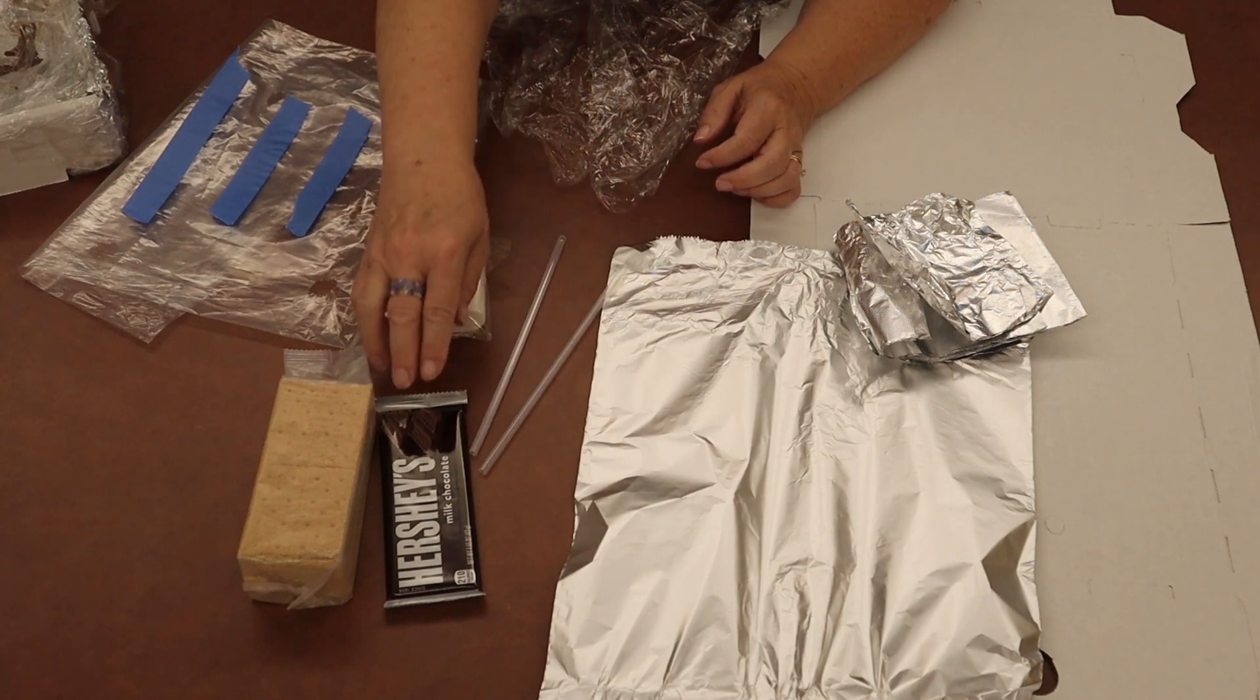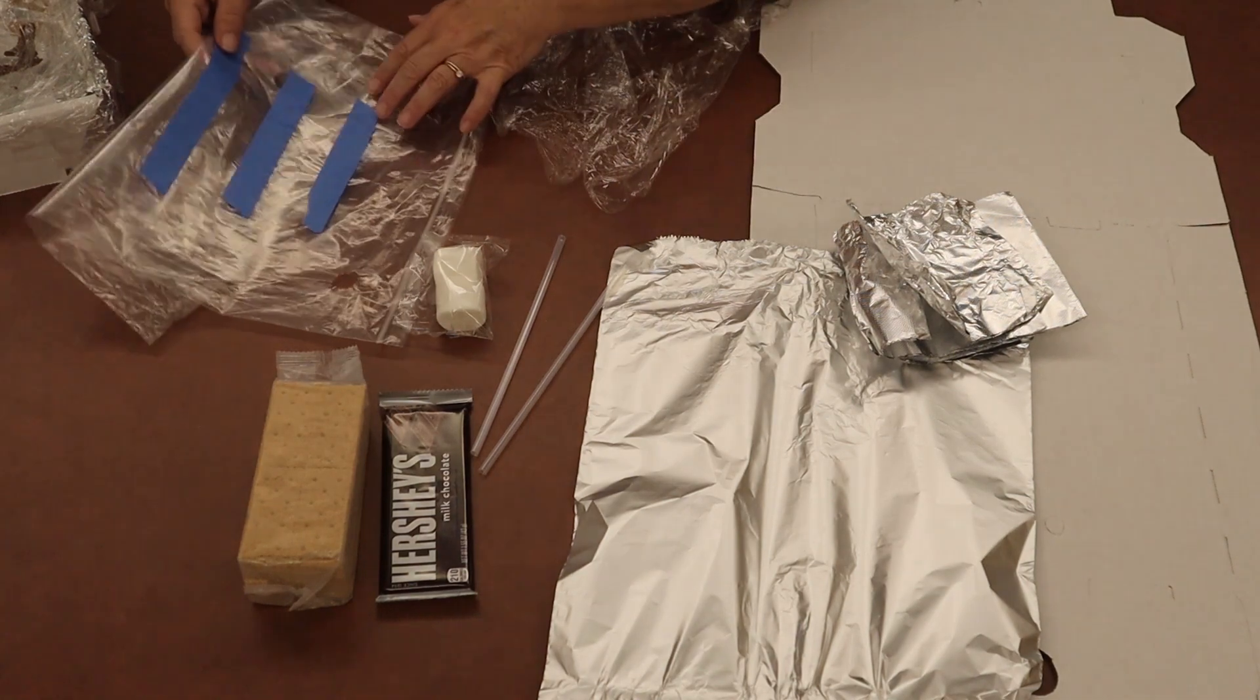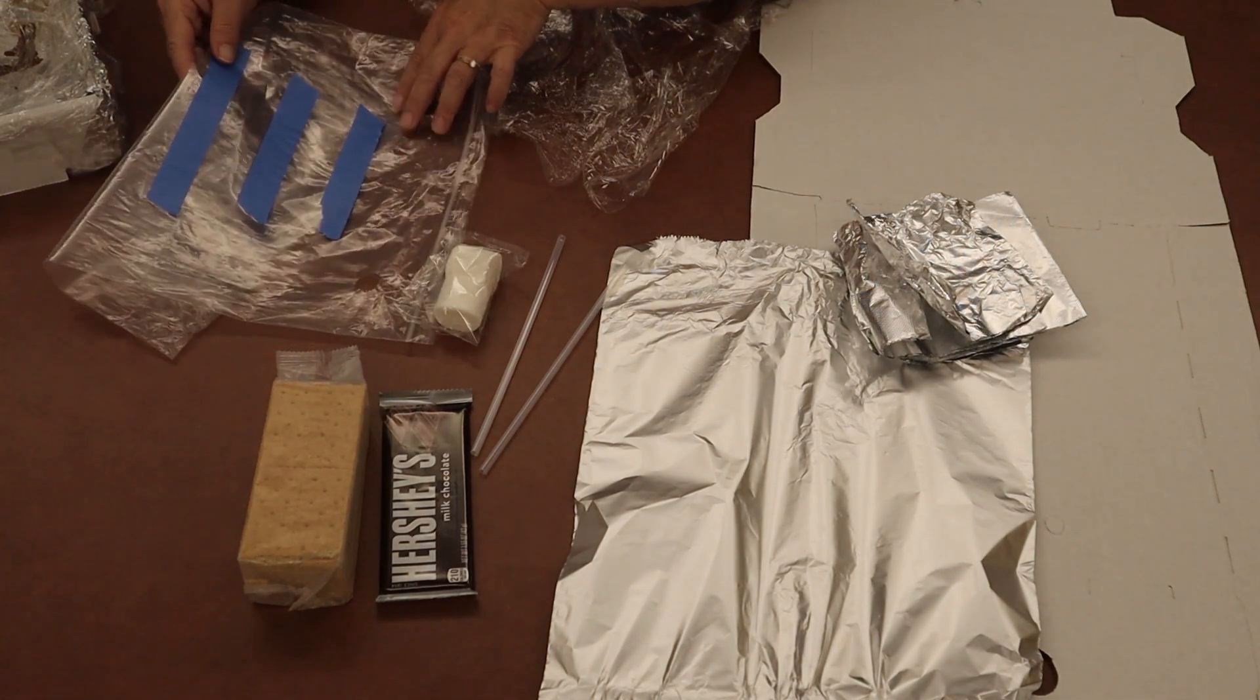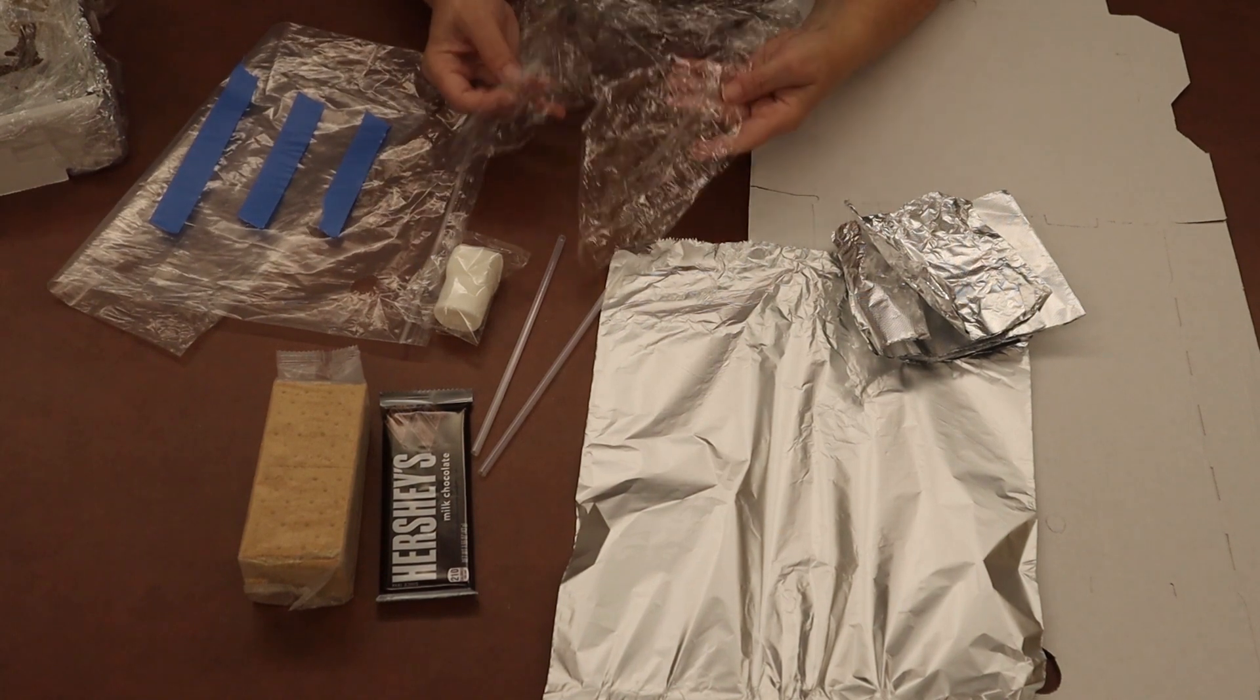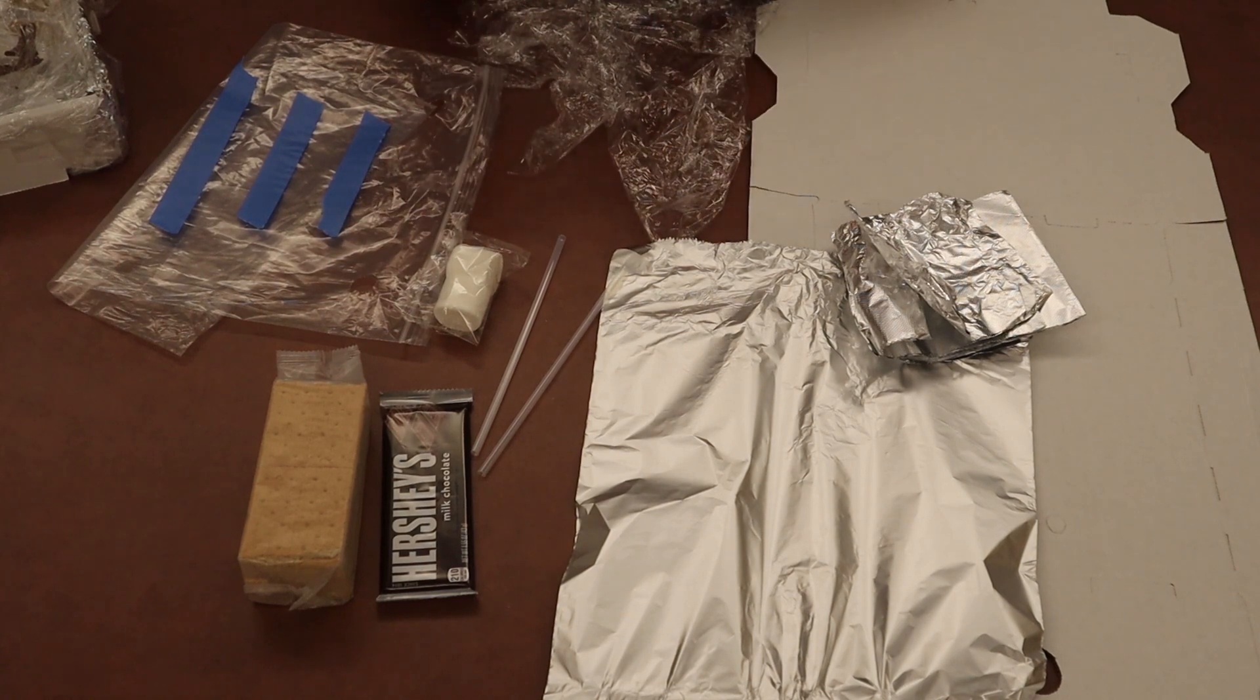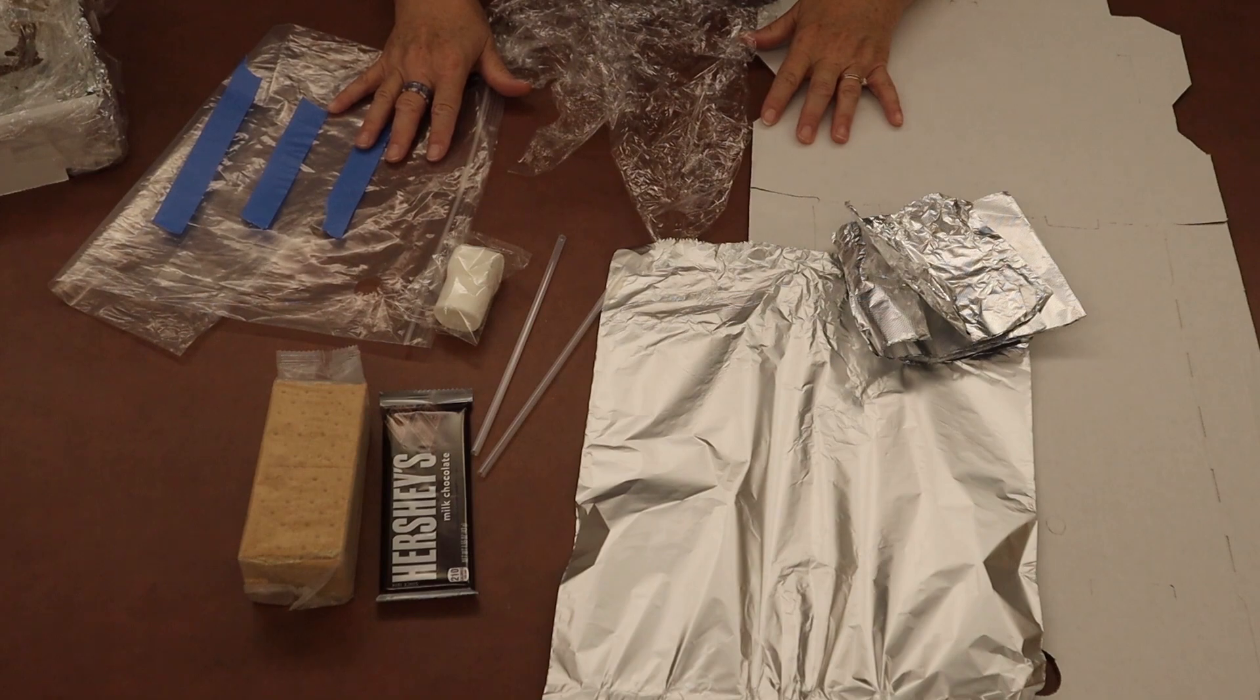Marshmallows, straws, a Hershey bar, a package of graham crackers. You will have some tape on the back of your take and make bag and that's going to help us secure the foil and the clear plastic wrap to your box to make your oven work. Let's get started.